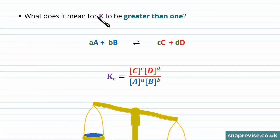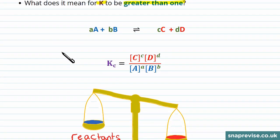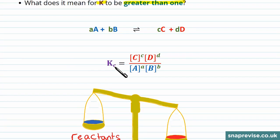So let's think about what it means for the equilibrium constant K to be greater than 1. Well, we have the expression for K written out here, and it's a fraction. If Kc or Kp is going to be greater than 1, then the top part, the numerator of the fraction, has to dominate.